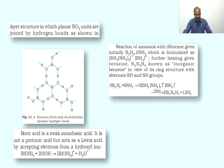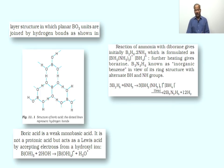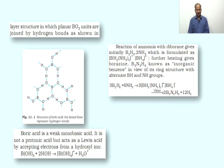Another important compound of Boron is diborane, and the reaction of diborane with ammonia is an important reaction. Reaction of ammonia with diborane initially gives an adduct in which one mole of diborane and two moles of ammonia combine. This adduct can be formulated in terms of some ionic species, and on further heating this adduct produces a complex compound called borazine — that is inorganic benzene. It is a cyclic compound, inorganic benzene, as seen in the reaction shown.